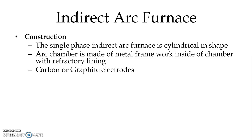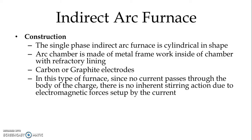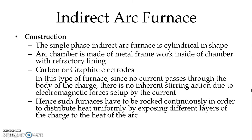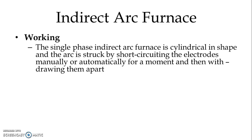Carbon or graphite electrodes are used. In this type of furnace, since no current passes through the body of the charge, there is no inherent stirring action due to electromagnetic forces set up by the current. So stirring action is not possible in case of indirect arc furnace. Hence, such furnaces have to be rocked continuously in order to distribute heat uniformly by exposing different layers of the charge to the heat of the arc. For that, rocking wheels are provided and we continuously rock at different angles as the melting process goes on.